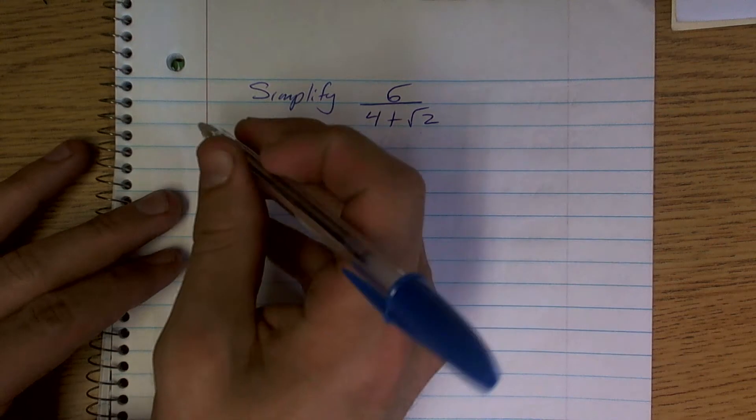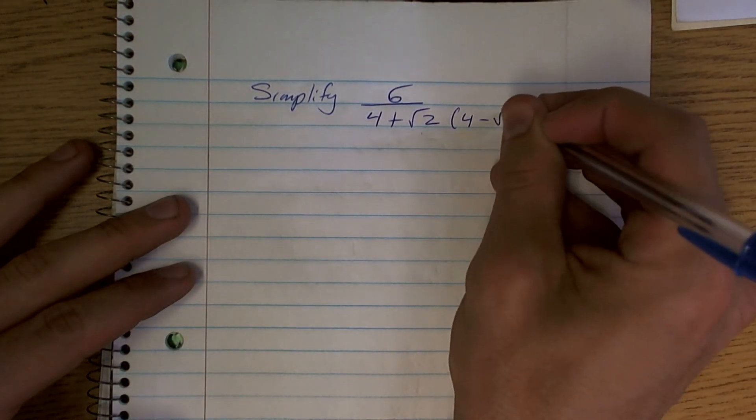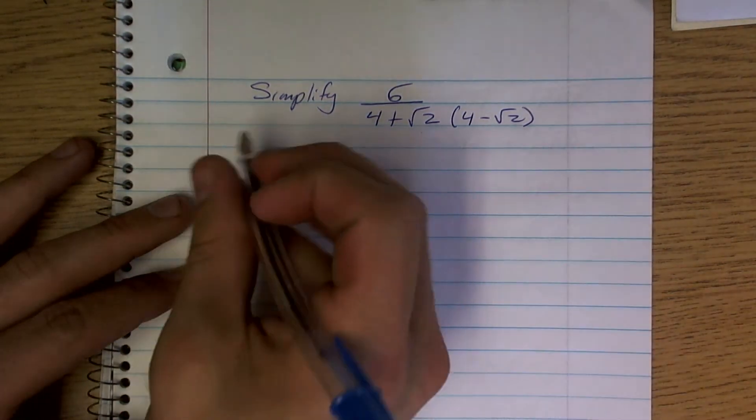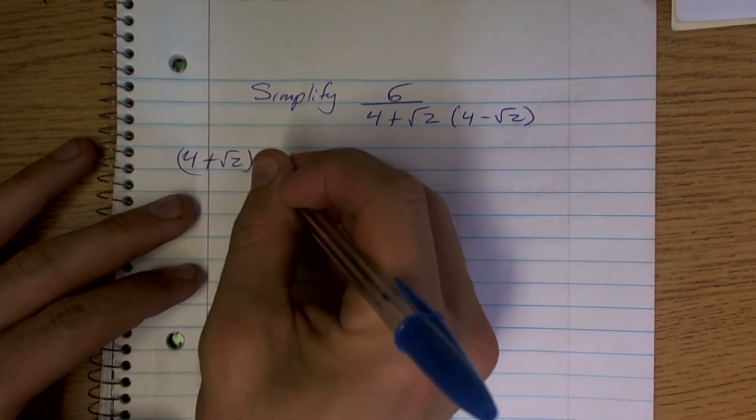Well, there's a couple things to look at. What we're going to want to do is actually multiply by 4 minus the square root of 2. And here's just a double check of work, you multiply by 4 plus the square root of 2. So if I was to do that...